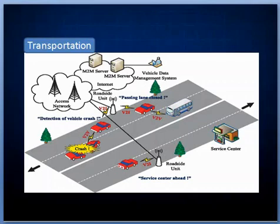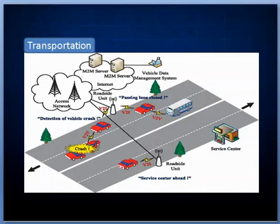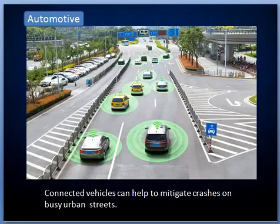Here is an example in transportation road safety: as you can see in this image, there is a car crash and signals are generated and sent to nearby antennas. These antennas send the data to M2M servers, which alert the hospital to send an ambulance, alert the nearby service center to tow the vehicle, and notify other vehicles in the lane to change lanes to avoid traffic.